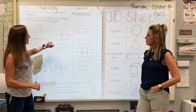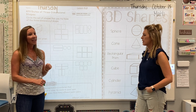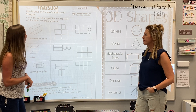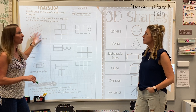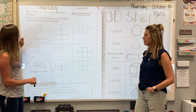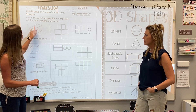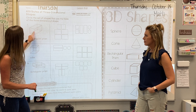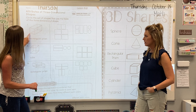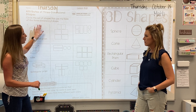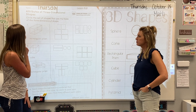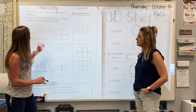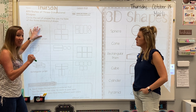Now these are really similar to nets. The only difference is that you can't fold this all up — it won't turn into anything. It's as if you took an object and you traced all the sides and this is what you would get on paper. So if we take a look at the first one, we have a rectangular prism. We know it's one because there are rectangles that go around the sides or the faces of that object.